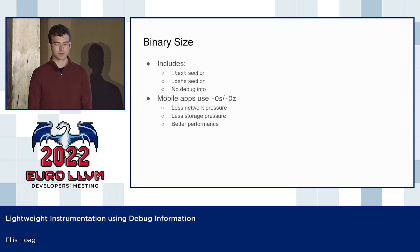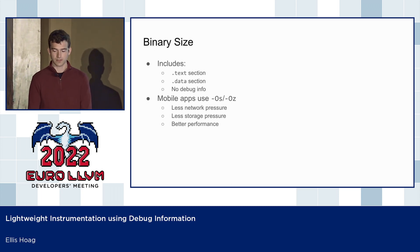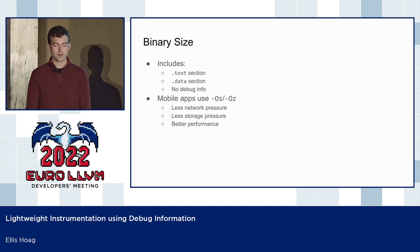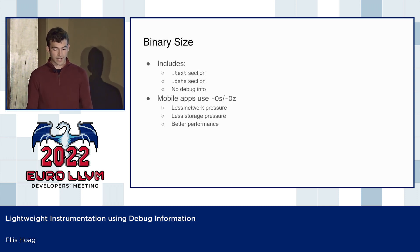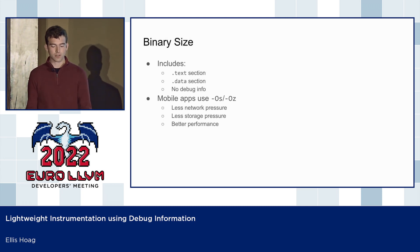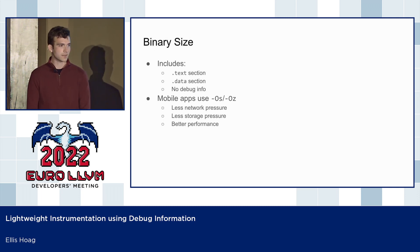When we talk about binary size, we are considering the size of the whole app being shipped to production. This includes the text section and the data section, but not debug info, which is stripped from the binary before it is shipped. On some systems, like embedded devices and mobile phones, it is common to use OZ optimization to minimize binary size. Smaller apps have less network pressure when downloading, less storage pressure after installation, and we even get better performance because smaller text size leads to fewer page faults when mobile apps are starting up.